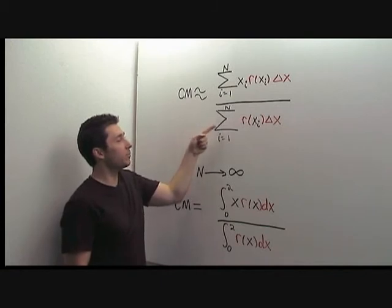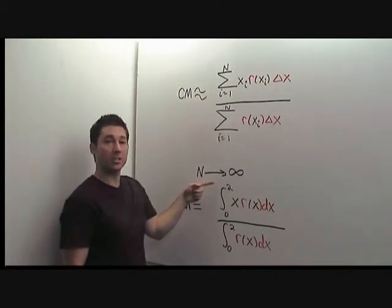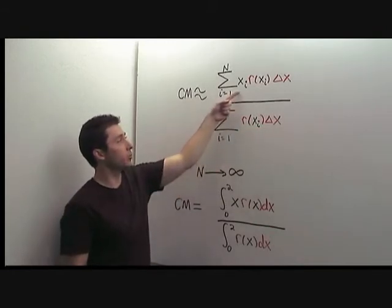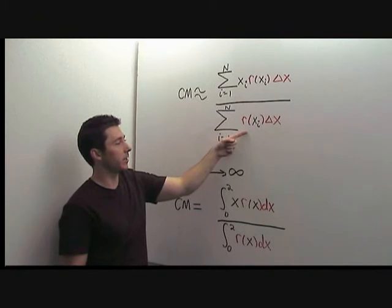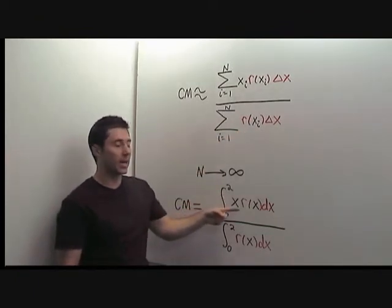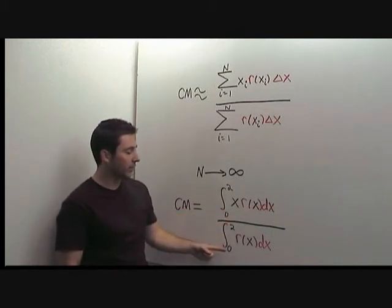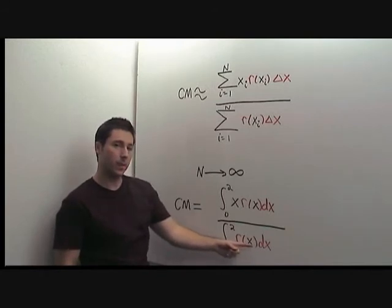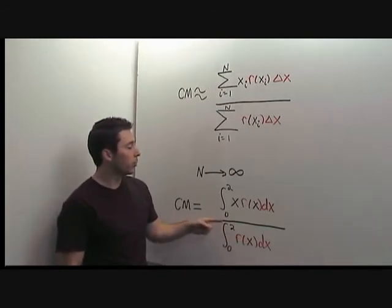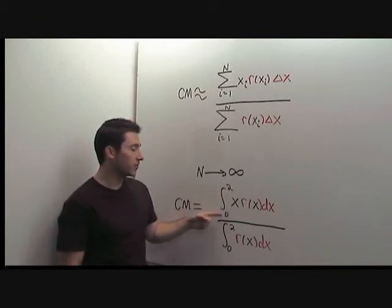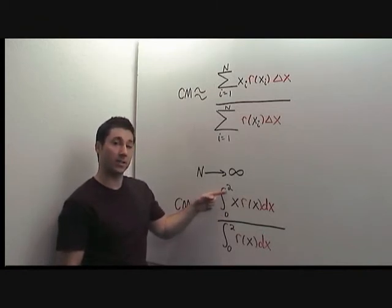When we let the number of pieces N go to infinity, Δx goes to zero and we recover an integral in the numerator and an integral in the denominator. That is, the integral from 0 to 2 of x·ρ dx divided by the integral from 0 to 2 of ρ dx. The lower limit is 0 and the upper limit is 2 because these are the leftmost and rightmost values of x on the rod.